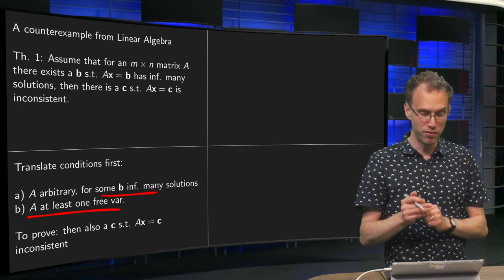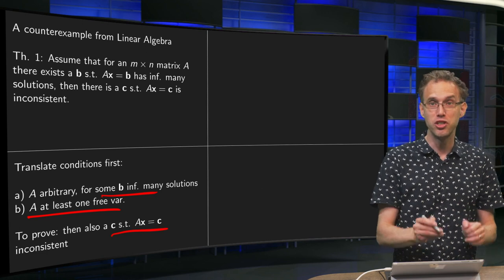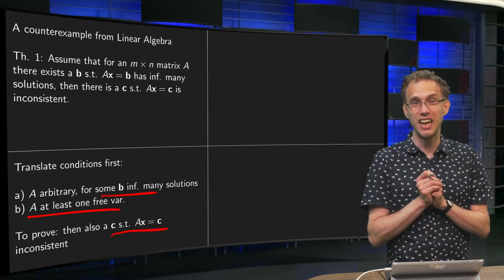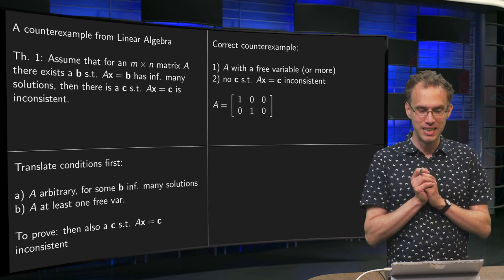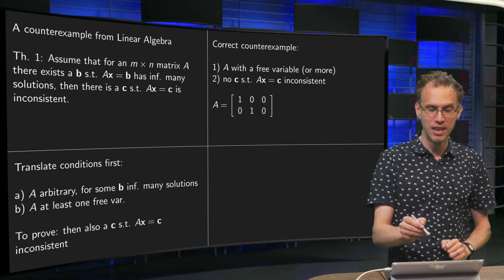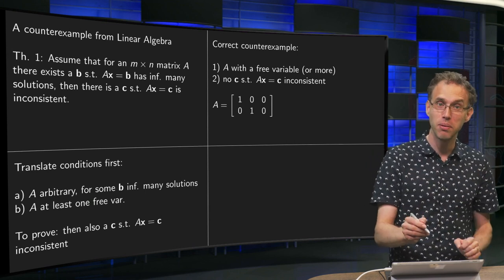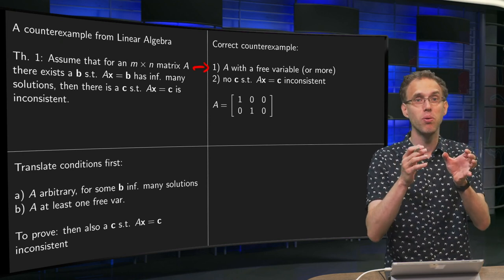You have some matrix A with free variables. And then you have to prove there is also a C such that Ax = C is inconsistent. So how do you disprove the theorem? How do you prove that it is not correct? Well, then you have to give a counterexample such that you have an A with a free variable, or more, doesn't matter.